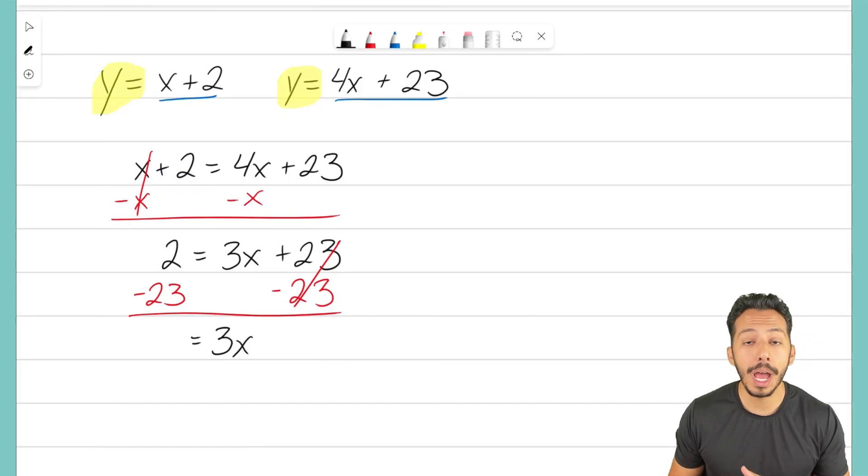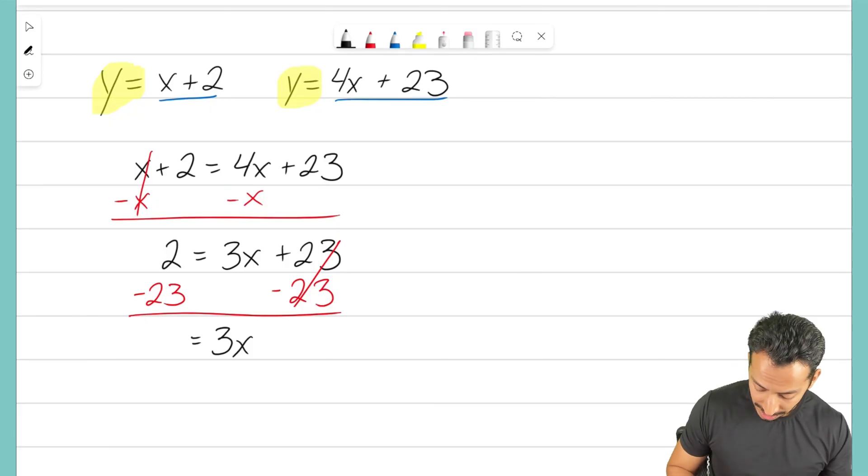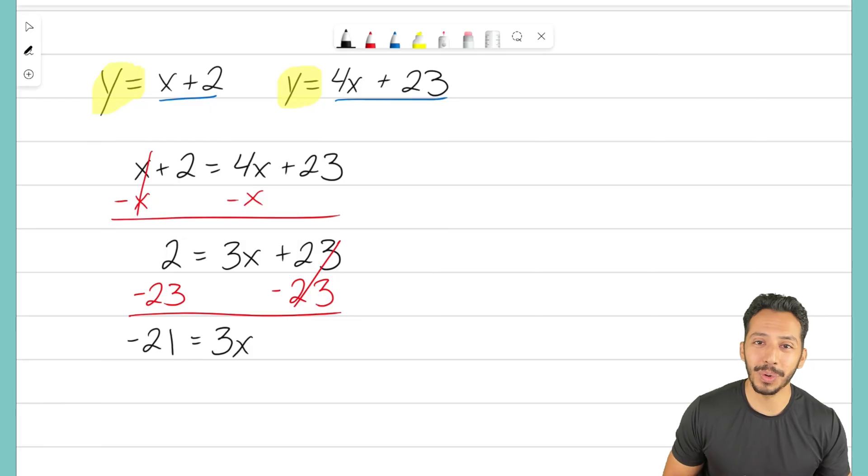Now on the left side, I have 2 minus 23. That's going to take us to a negative number now. That equals negative 21. If you don't believe me, get a calculator and check that out.